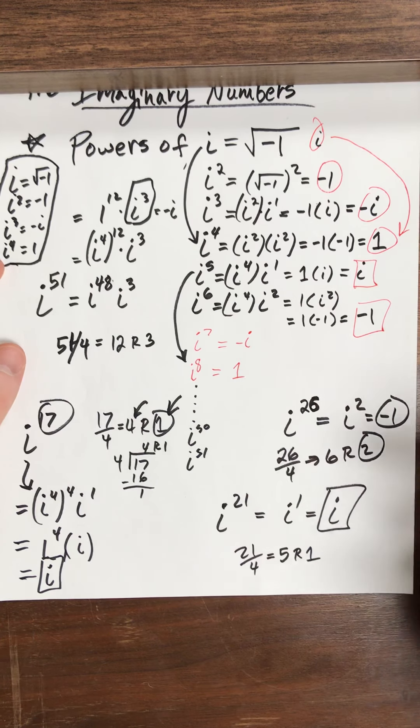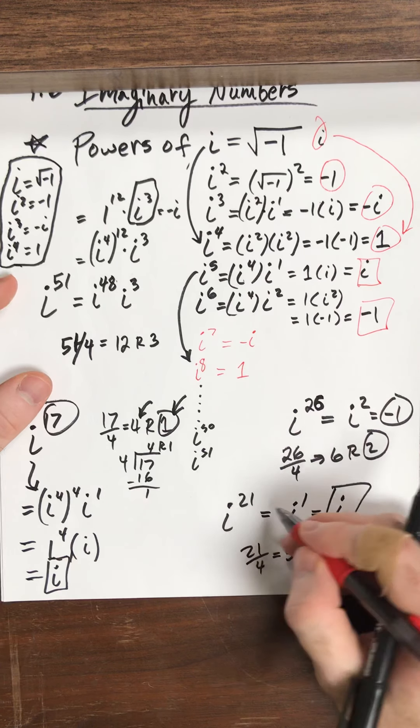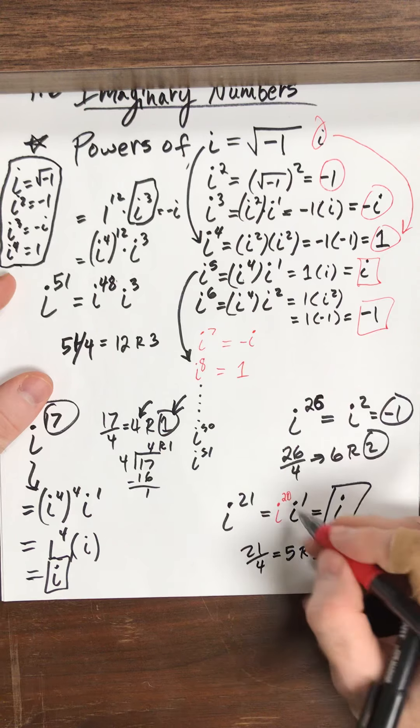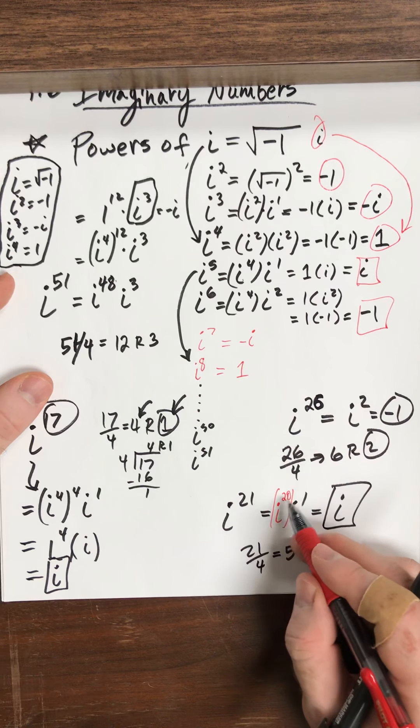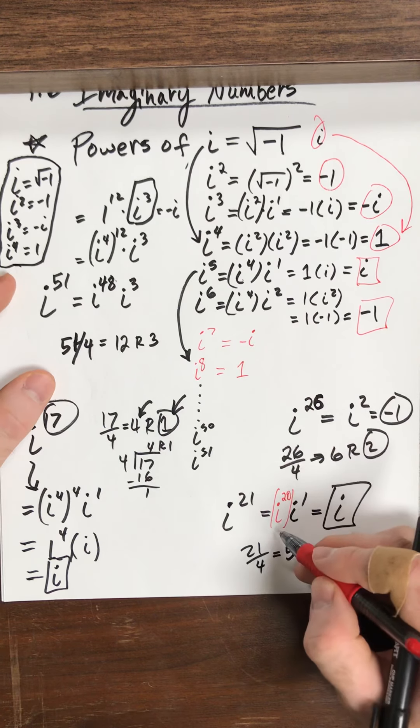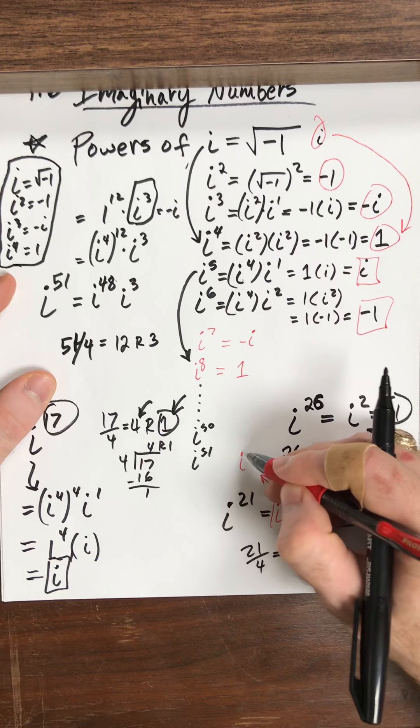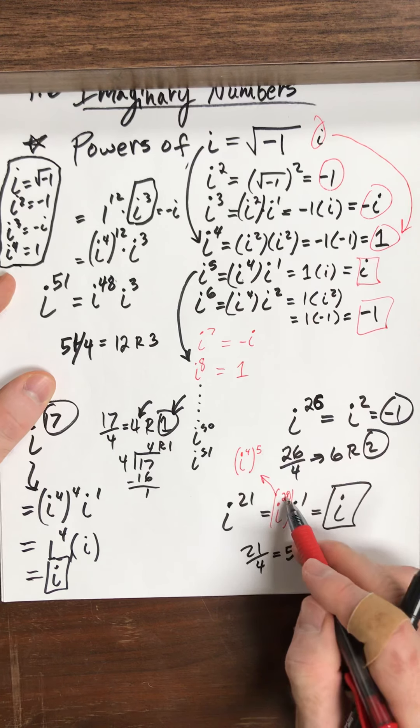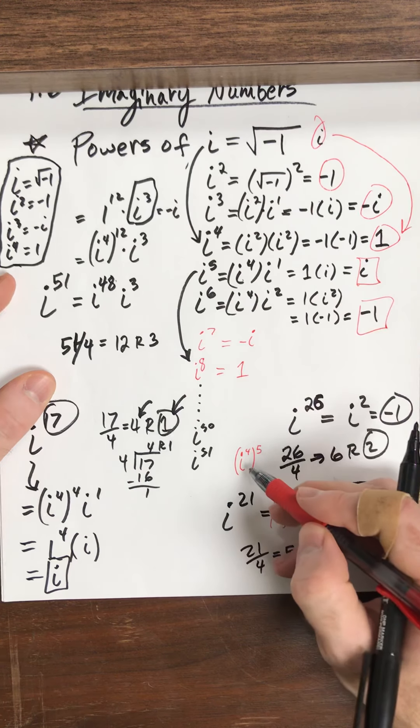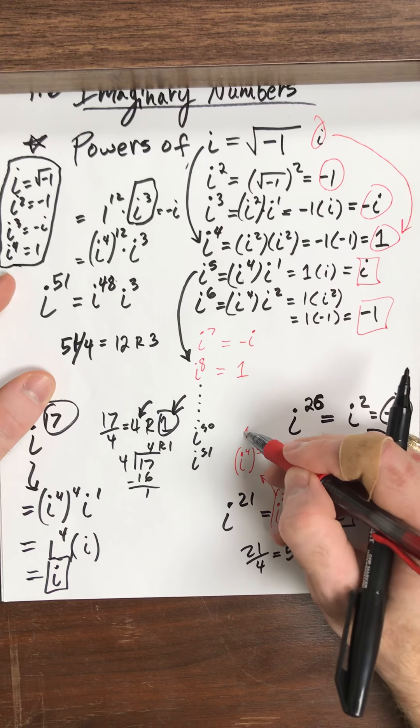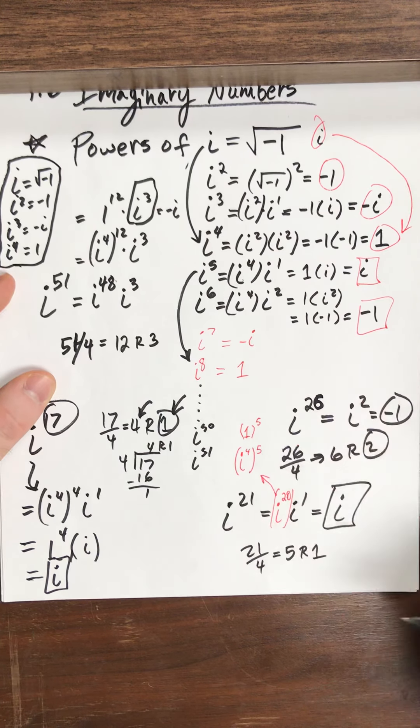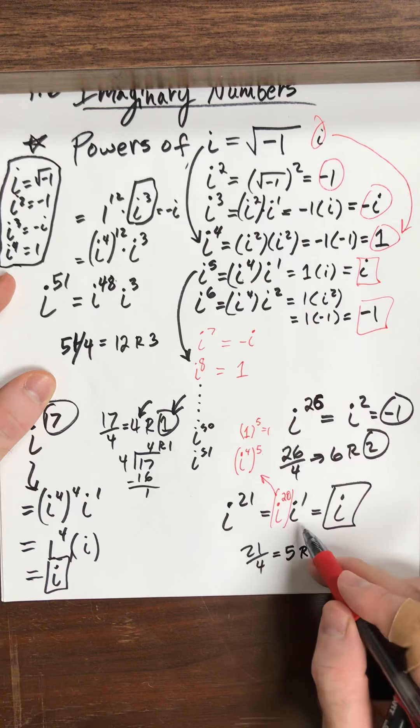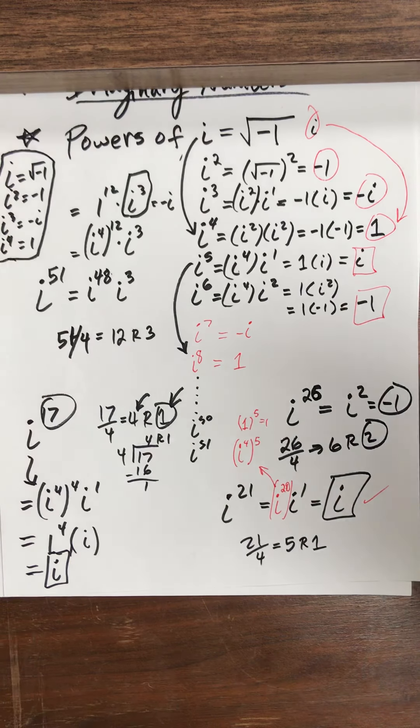The key fact that we're taking advantage of is that this really is here, but the thing is, this i to the 20 can be written as i to the 4th raised to the 5, power to a power we multiply exponents. And we're taking advantage of the fact that i to the 4th is 1, and 1 raised to some number is always going to be 1. So basically, that just drops out, and I get my answer. All right, guys.